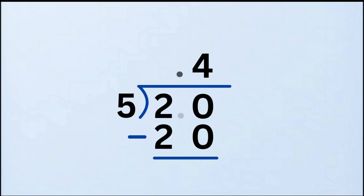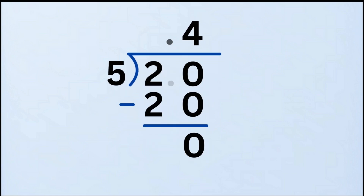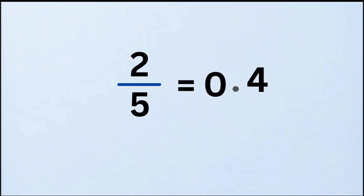Now subtract: 20 minus 20 equals 0. No remainder — we're done. So the final answer is: 2 fifths as a decimal is 0.4. Not too hard, right? Let's try another!